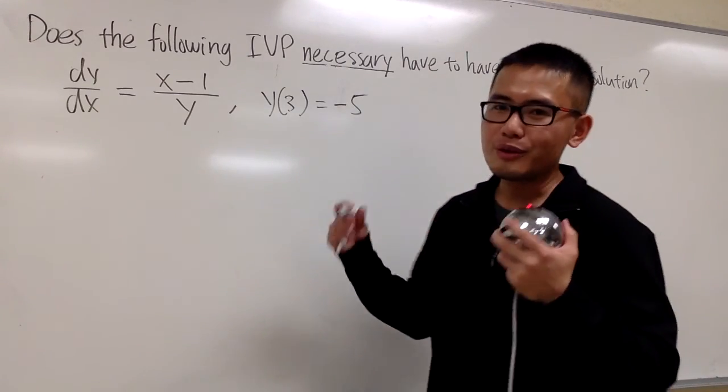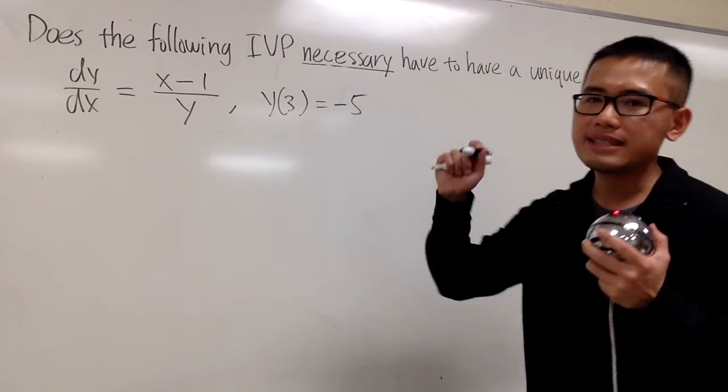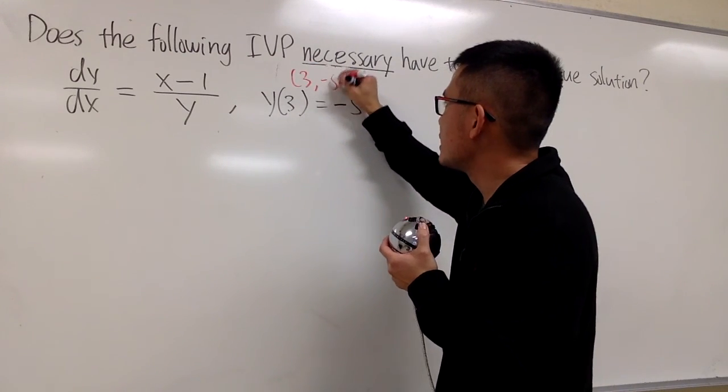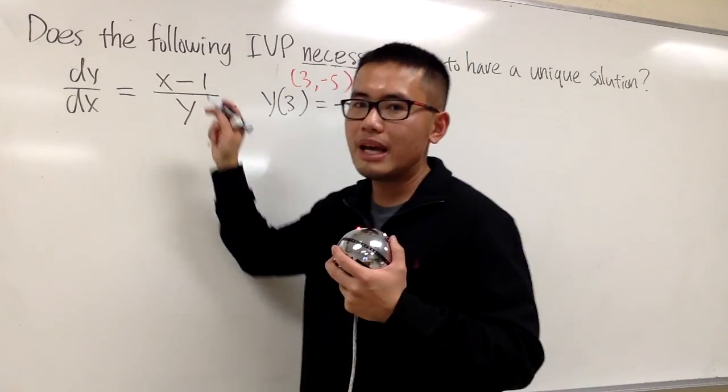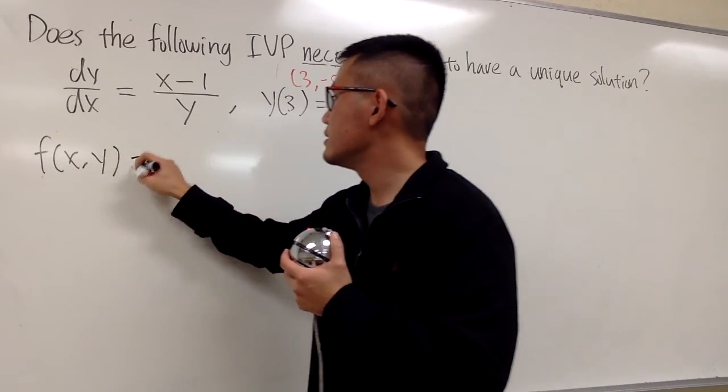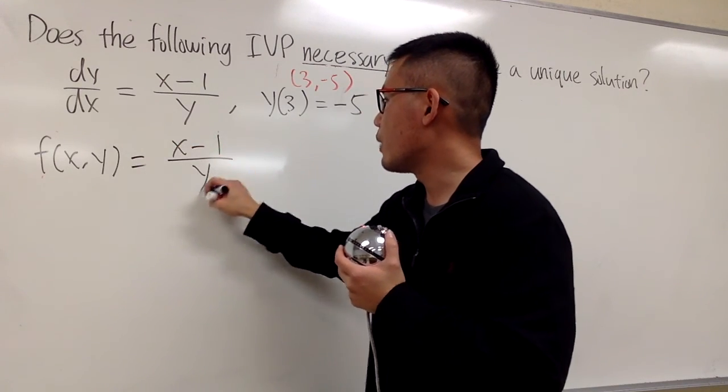Of course, we are going to verify if this right here has a unique solution or not. So right here, this is the point now, 3 comma -5, and this is still my f(x,y), so let me write it down. f(x,y) is still, it's the same one, (x-1)/y.